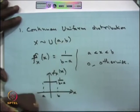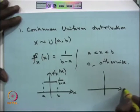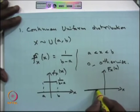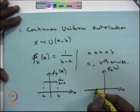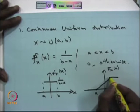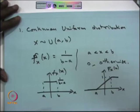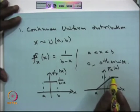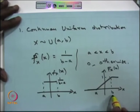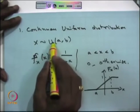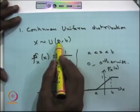Looking at the CDF of the continuous uniform distribution: up to point a it is 0, then it increases linearly, and at point b it reaches 1. So if you see a random variable's CDF rising linearly from 0 to 1 over interval [a, b], you can identify it as a continuous uniform distribution over [a, b].